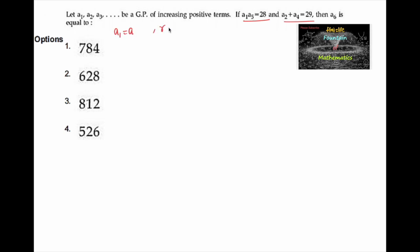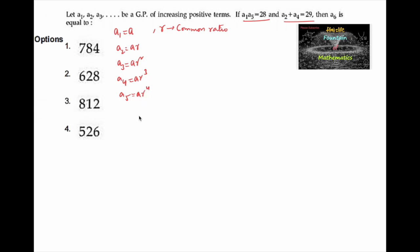And r is the common ratio. So then we can write: a2 is equal to ar, a3 is equal to ar², a4 is equal to ar³, and a5 is equal to ar⁴. It is given that a1·a5 is equal to 28, so we can write a into ar⁴ is equal to 28.